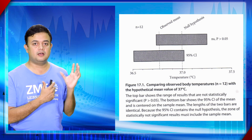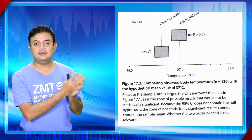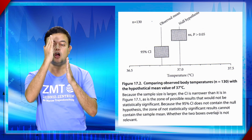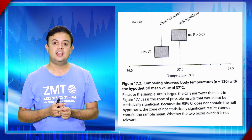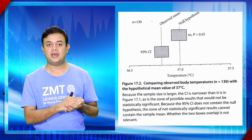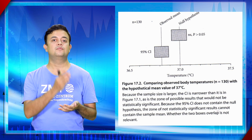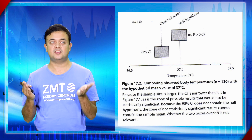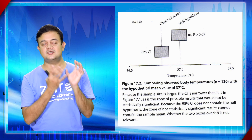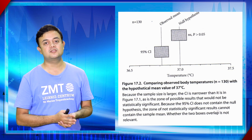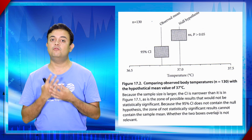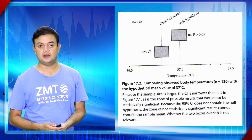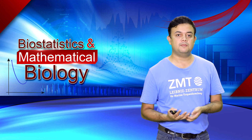In the next graph, the confidence intervals are narrower than in the earlier graph, and this narrower confidence interval does not include the null hypothesis of 37 degrees. Focusing only on the bottom panel — the null hypothesis is not part of that CI range. Therefore, the p-value has to be less than 0.05 and you can conclude that the results are statistically significant.